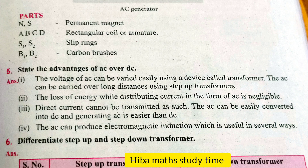State the advantages of AC over DC. The voltage of AC can be varied easily using a device called a transformer. AC can be carried over long distances using step-up transformers. The loss of energy when distributing current in the form of AC is negligible. Direct current cannot be transmitted as such. AC can be easily converted into DC, and generating AC is easier than DC. AC can produce electromagnetic induction, which is useful in several ways.